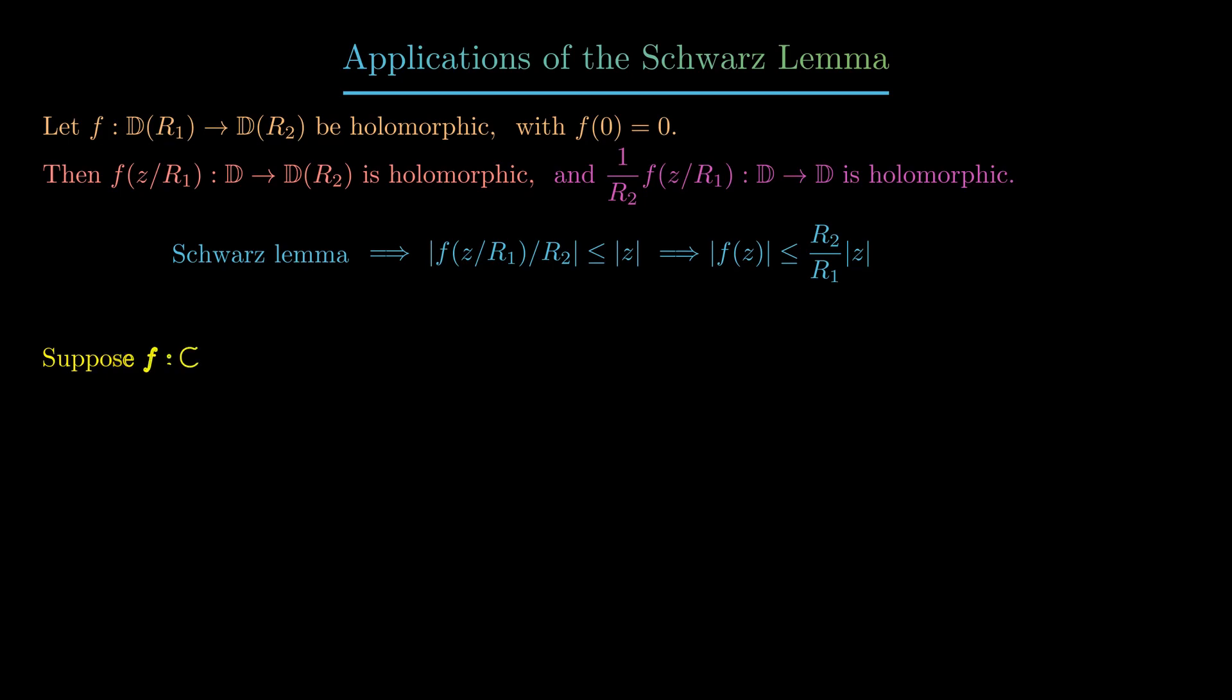Now if we suppose that f is holomorphic everywhere, namely we'll suppose that f is entire, then for any r1 and r2 positive such that f maps this disk of radius r1 into some disk of radius r2, then the absolute value of f(z) is of course controlled by r2 over r1 times the absolute value of z.